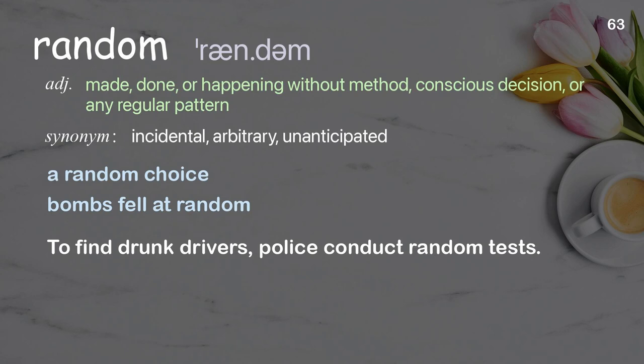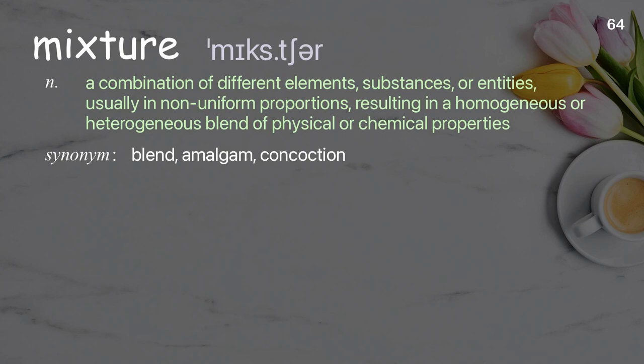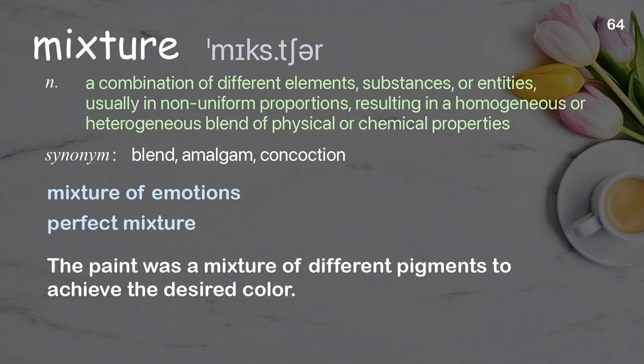Mixture: a combination of different elements, substances, or entities, usually in non-uniform proportions, resulting in a homogeneous or heterogeneous blend of physical or chemical properties. Examples: mixture of emotions, perfect mixture. The paint was a mixture of different pigments to achieve the desired color.